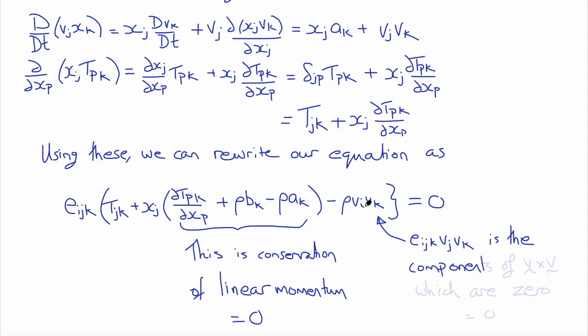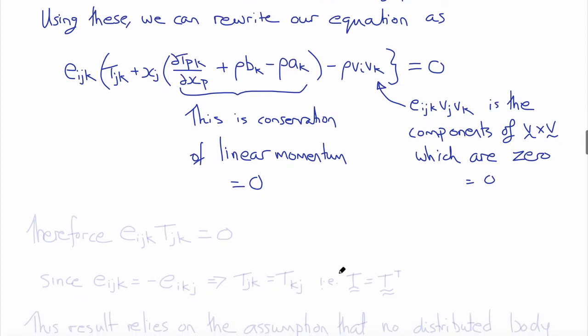So therefore this term disappears, this term disappears, and we're left with Eijk, the permutation symbol, times TjK is equal to zero.